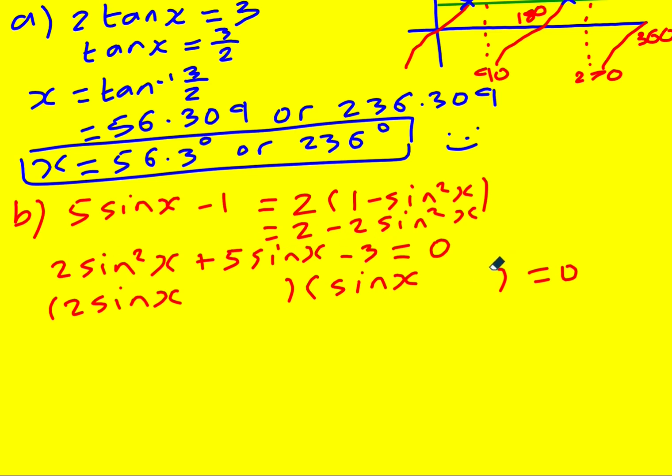But if it's going to factorize, it's got to be a 2 and a 1 here to get the 2 sine squared x. And then for the minus 3, but we need a plus 5, I have to use 3 and 1. So it's got to be 3 over here because then I'll get 6 sine x, and then a 1 here to get sine x. And then if I make this negative, this will become negative and that'll be positive, and then I'll get my 5 sine x. So sine x equals a half or minus 3.